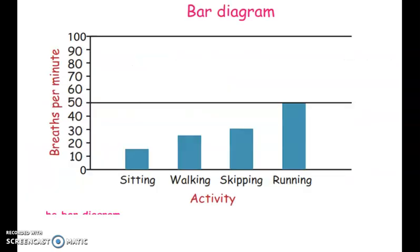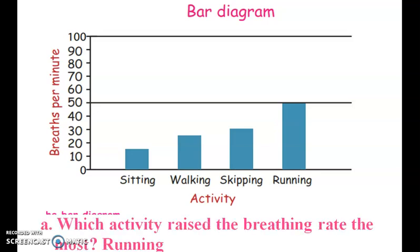This is the bar diagram. This is the chart showing breaths per minute for different activities: sitting, walking, skipping, and running. Which activity raises the breath rate the most? That is running.